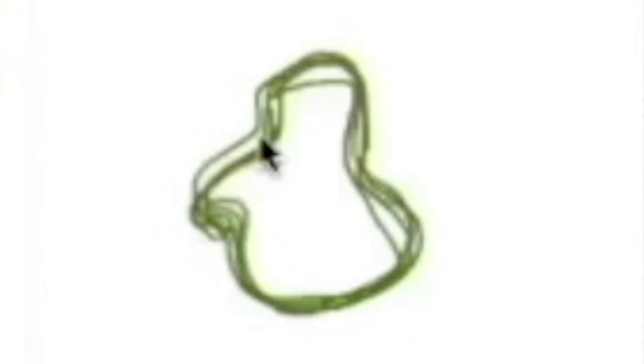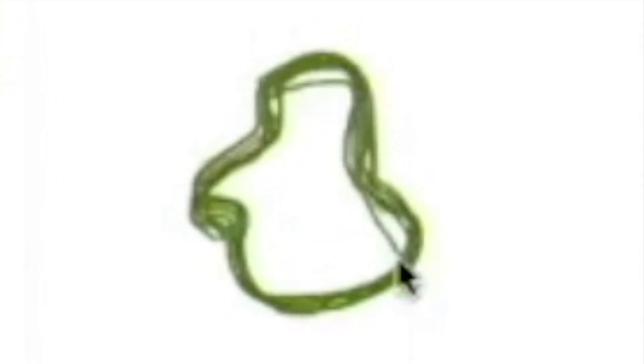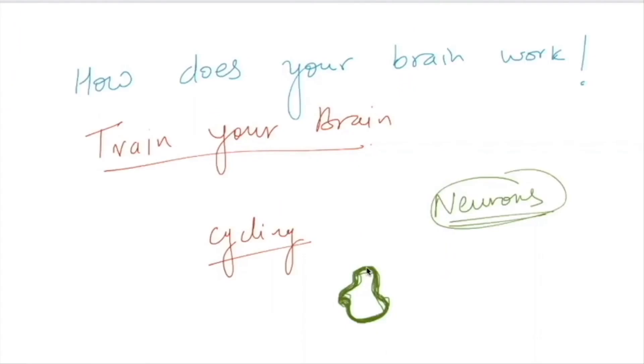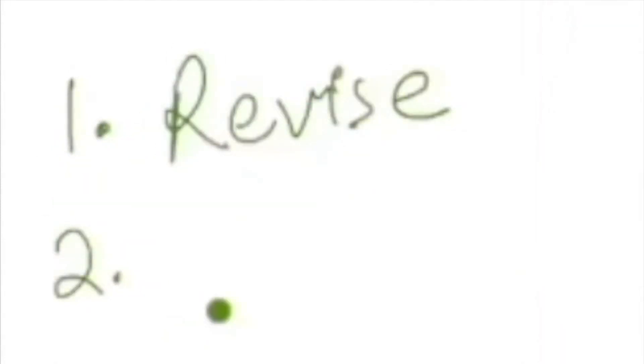When you are learning to cycle, a pattern is forming in your brain. The first time you did it, a pattern got formed. The second time, a pattern got formed on the same thing. The third time, another pattern formed on the same thing. You are repeating consistently, and the pattern grows bolder and stronger — it becomes very easy to recall.